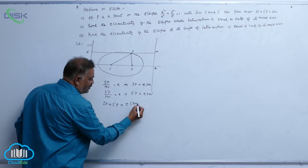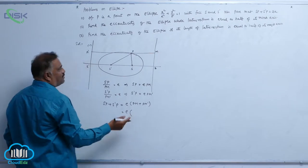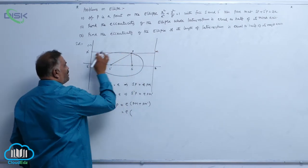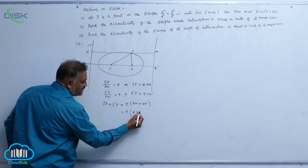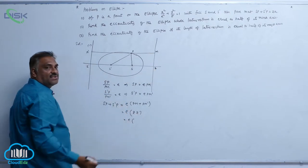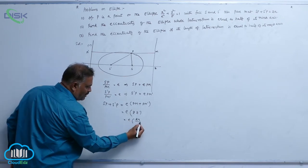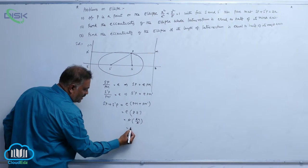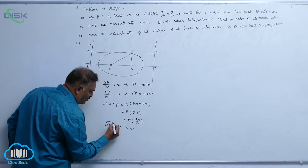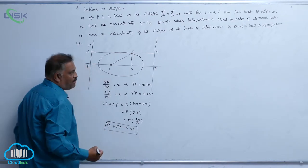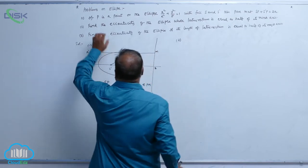Now add these two equations: SP plus S'P equals e times (PM plus PM'). PM plus PM' is nothing but MM', which is the distance ZZ' between the two directrices, equal to 2a/e. The e cancels, giving SP plus S'P equals 2a. Problem one is solved.